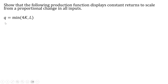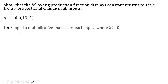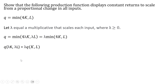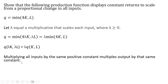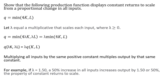And our final production function. Multiplying each input by lambda, we can bring out this lambda in front, and once again it shows us that we have constant returns to scale. If lambda equals 1.5, a 50 percent increase in all inputs increases output by 1.5, or 50 percent — the property of constant returns to scale.